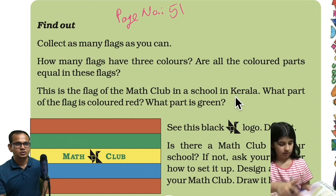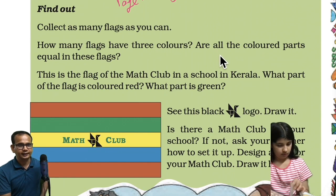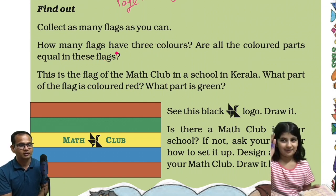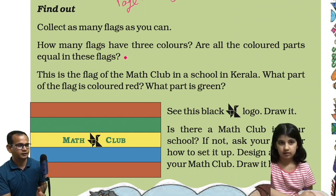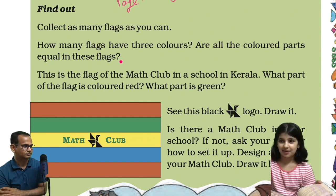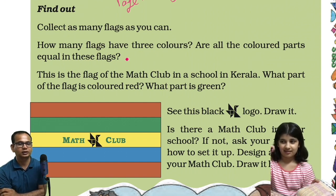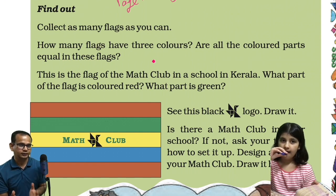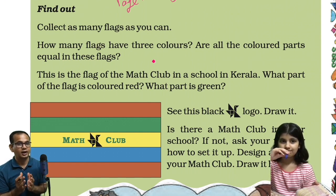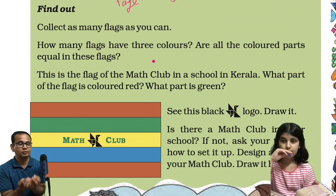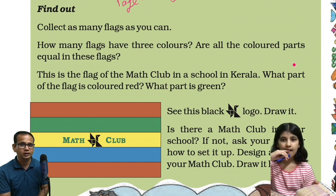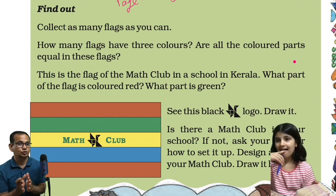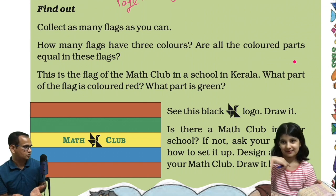Page number 51: collect as many flags as you can. You have to collect them from somewhere — for example, from an atlas. You can take printouts and cut those portions. How many flags have three colors? You have to find out. Are all the colored parts equal in these flags? You have to check whether all the color portions are equal.